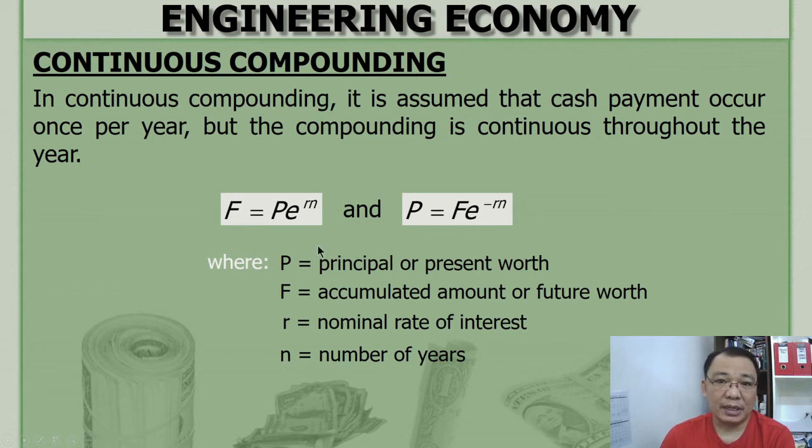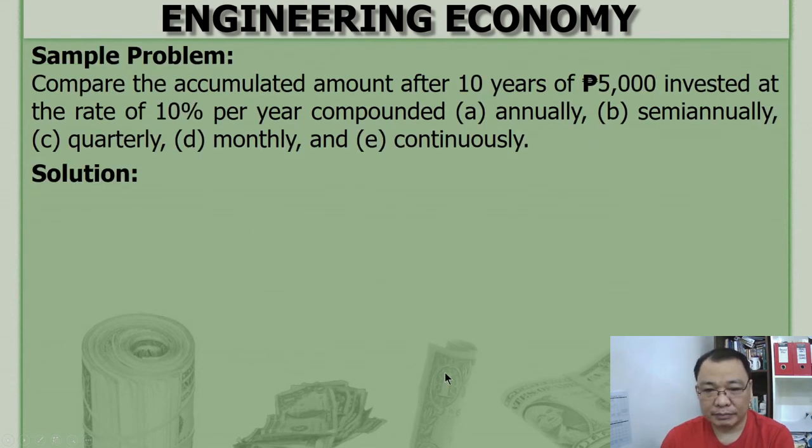You might get confused about discrete compounding and the number of interest periods. For continuous compounding, number of years. Once a year.